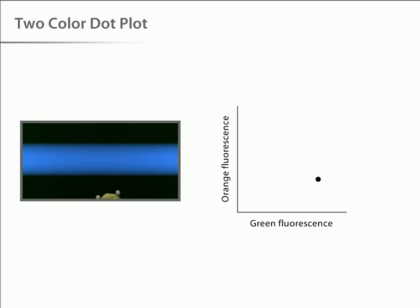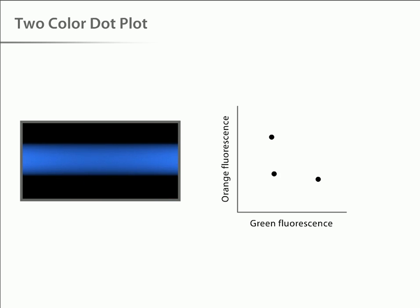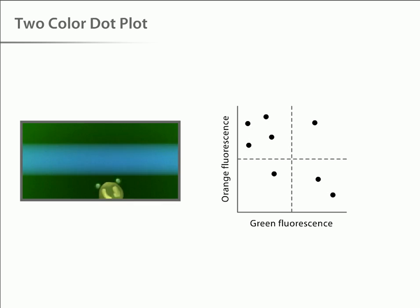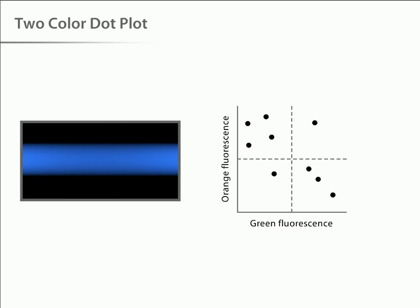If we analyze data from the two-color experiment using a scatter plot, four distinct populations emerge. Looking at the dot plot in terms of quadrants, cells with only bright orange fluorescence appear in the upper left quadrant. Cells with only green fluorescence appear in the lower right quadrant. Cells with both bright green and bright orange fluorescence appear in the upper right quadrant. And finally, cells with both low green and low orange fluorescence appear in the lower left quadrant. Multiple fluorescence parameters are necessary to dissect complex biological systems.